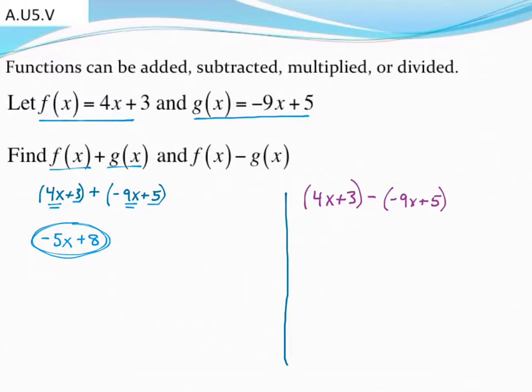Or what I like to do, I like to just not even deal with subtraction. I'm just going to make that an addition sign right away. And I can do that, but I have to change all the signs after this. So that would have to become a positive 9x, and that would have to become a negative 5.